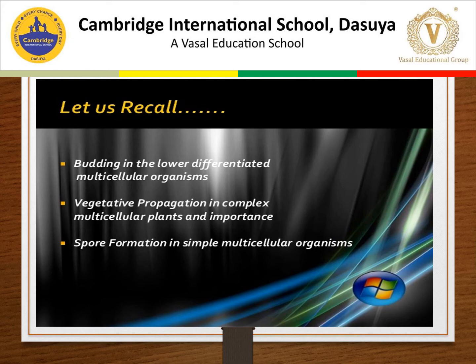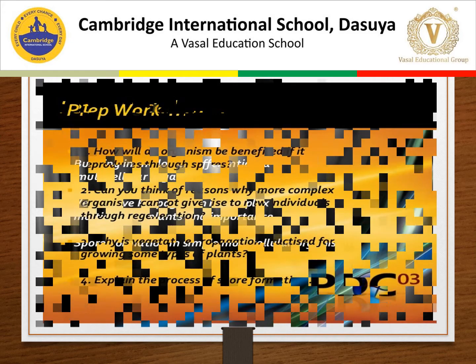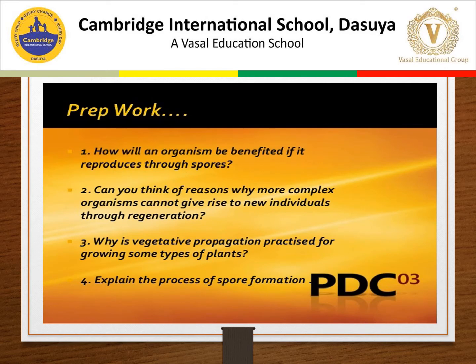We have discussed vegetative propagation and spore formation. Questions to consider: How will an organism benefit if it reproduces through spores? Can you think of a reason why a complex organism cannot give rise to new individuals through regeneration? Why is vegetative propagation practiced for growing some types of plants? Explain the process of spore formation.